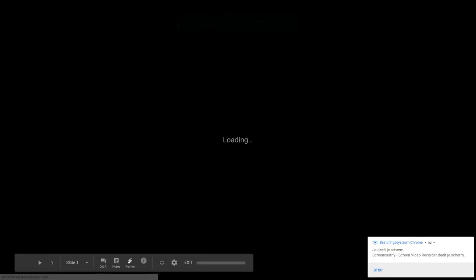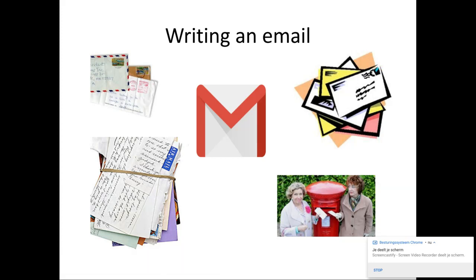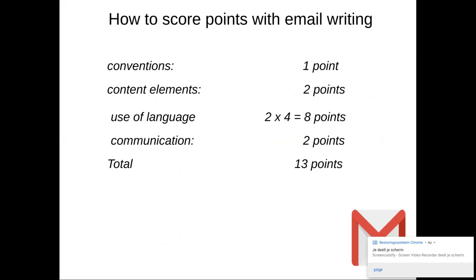Hello, I'm going to explain to you about writing an email in English. You have got notes from the previous one, but there was an email to somebody of your age. And now we are going to write an email to an adult person, like someone who works in a company or a teacher or whatever. Again, you have the same points: conventions, content elements, use of language, communication. The total points are 13.